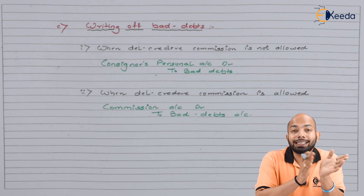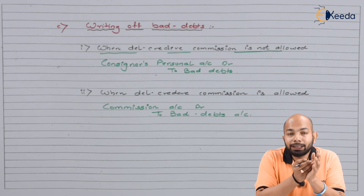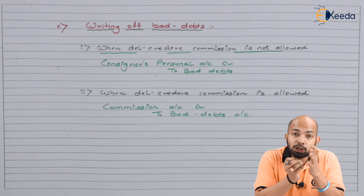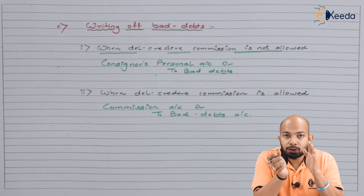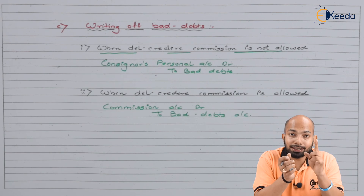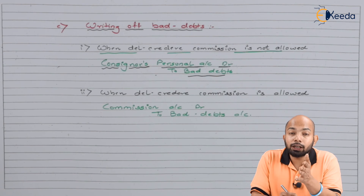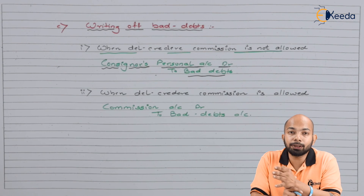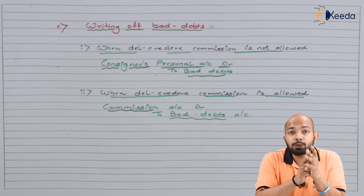When the del credere commission is not allowed, it is the consignor's liability — so consignor's personal account will be debited and bad debts account will be credited, because the bad debts that were created as an expense on the debit side need to be written off on the credit side. On the other hand, if the del credere commission is allowed, it is the consignee's responsibility, so the commission account will be debited and bad debts account will be credited. These are the journal entries to pass in the books of the consignee.